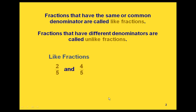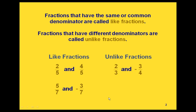Here are two fractions that are like: 2 fifths and 4 fifths, since they both have a denominator of 5. Also, 5 sevenths and negative 3 sevenths both have a denominator of 7. Some unlike fractions would be 2 thirds and negative 3 fourths, since they have different denominators. Also, 5 sixths and 5 twelfths have different denominators, so they're unlike fractions.